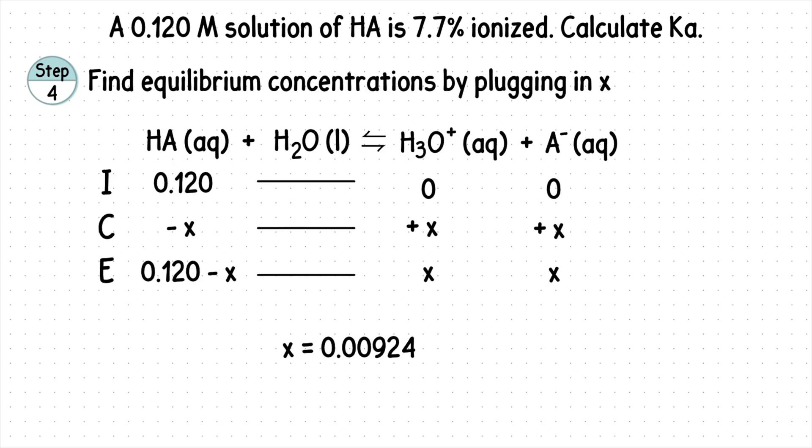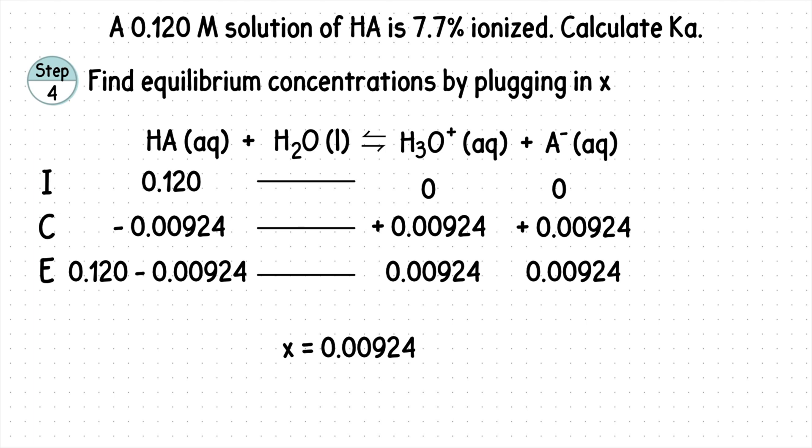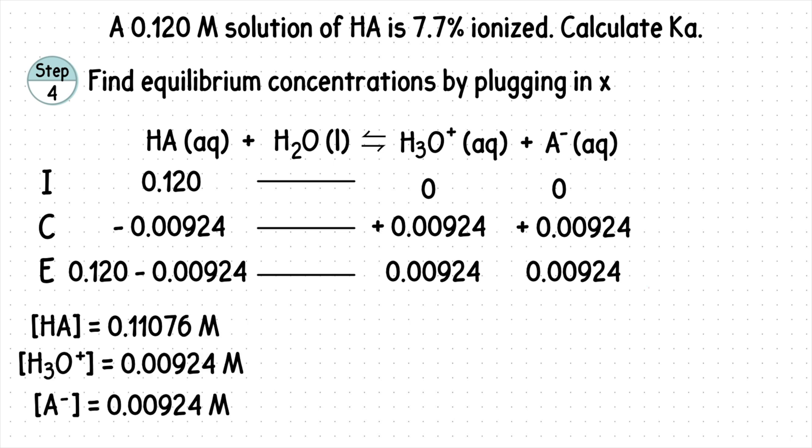Step four, find equilibrium concentrations by plugging in X. We'll find our acid concentration by subtracting these values. And both the hydronium ion and conjugate base have the same concentration value.